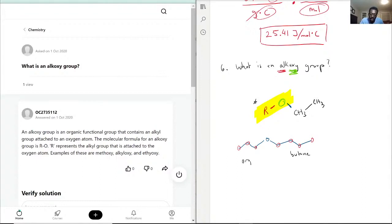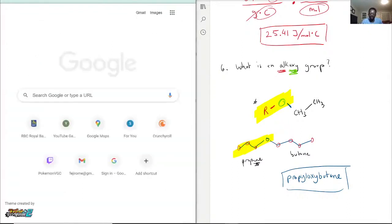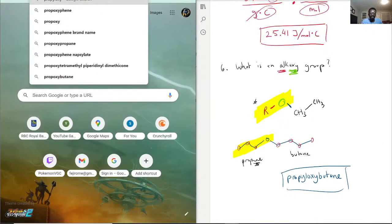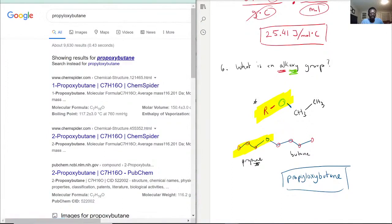And the shorter one actually is known as propane. So what we do, we want to drop the ane, like the propane part, and change that to the oxy ending. So we'll actually have propyloxy. So I can write that better. Propyloxybutane. And that would be the name for this compound. But the thing that they're focusing on is the alkoxy group. That would be the propane plus the oxygen.